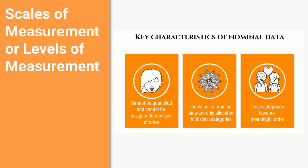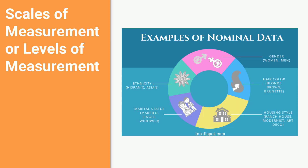To understand it more, here are the key characteristics of nominal data. First, nominal data cannot be quantified and cannot be assigned to any type of order — you cannot rank or order nominal data. Second, the values of nominal data are only allocated to distinct categories; they are categorized but not measured. Third, those categories have no meaningful order. Nominal data is simply categorized.